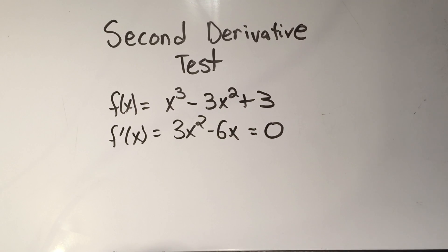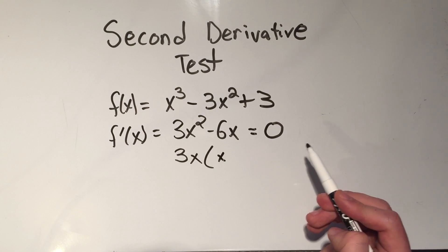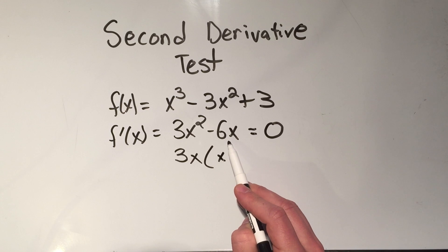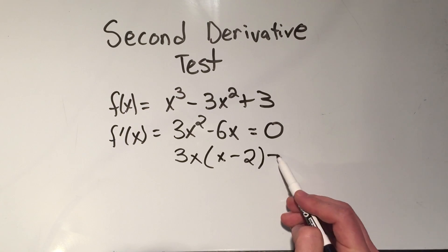The easiest way to do this is by factoring. So I take out the greatest common factor. The greatest common factor between these two, I see a 3 in both, and I see an x in both. If I pull a 3x out of 3x squared, that leaves me with 1x. If I pull a 3x out of minus 6x, I'll be left with minus 2.